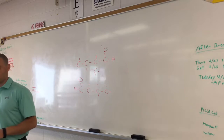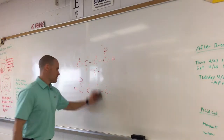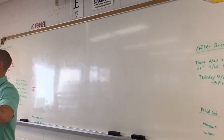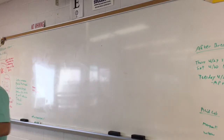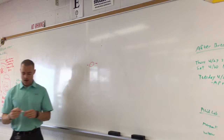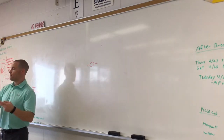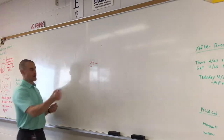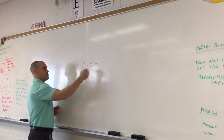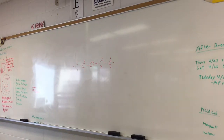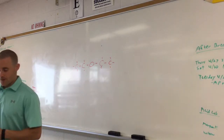Number seven, diethyl ether — Andrew, what's the functional group for an ether? Very good. You have 'diethyl,' so what does that mean? Two ethyl groups — two carbons each, but you have two of them. So you draw one ethyl on each side of the oxygen. That's diethyl ether. Is that symmetrical? Yes. What does that mean? Non-polar — will it mix with water? No, because it's non-polar.